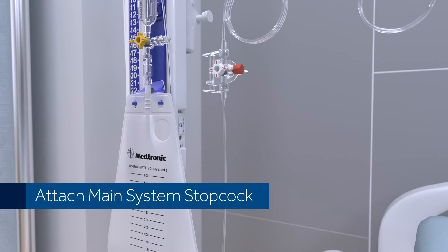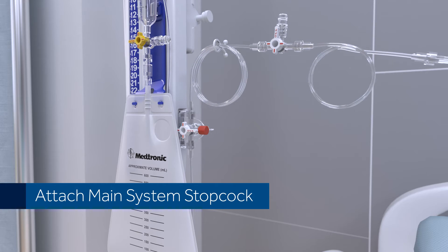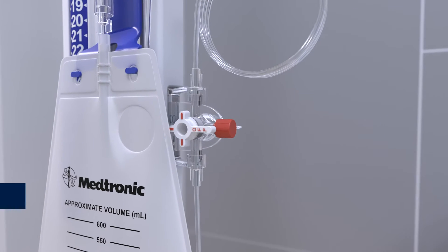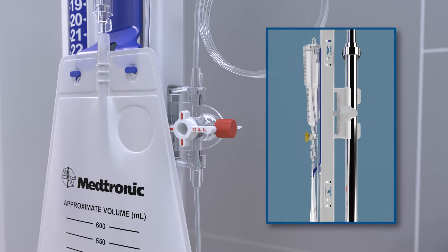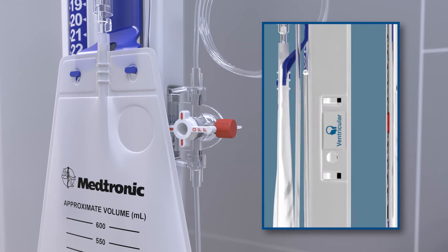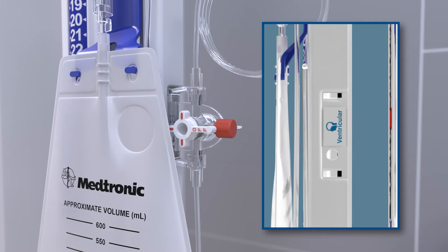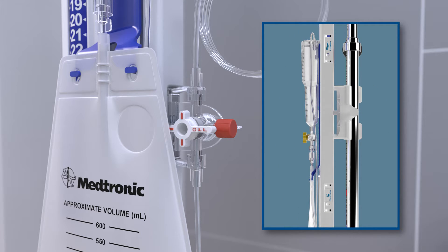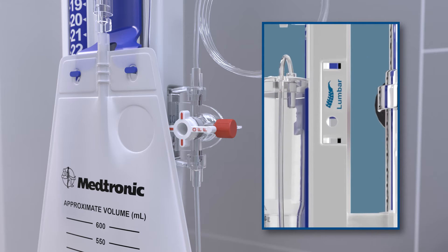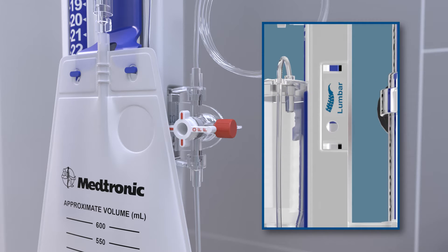Begin by attaching the main system stopcock to the back panel. If the primary therapeutic goal of drainage is to drain at a positive pressure threshold, attach the main system stopcock into the lower location on the back panel, denoted by the picture of a patient's head and the word ventricular. If the primary therapeutic goal of drainage is to drain a specific volume of CSF per hour, attach the main system stopcock into the upper location on the back panel, denoted by the picture of a lumbar spine and the word lumbar.